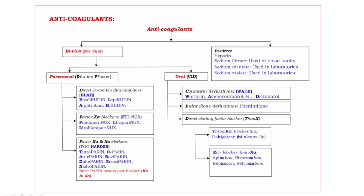Thrombin blocker — example: dabigatran. Second one, 10A blockers — these end with the suffix '-ban' and have 'xa' in the drug name. Examples are apixaban, rivaroxaban, edoxaban, and betrixaban.